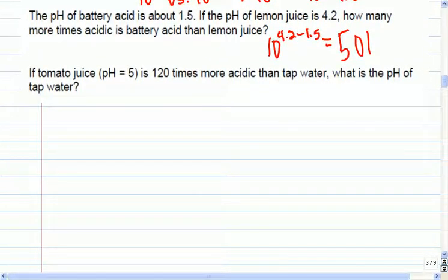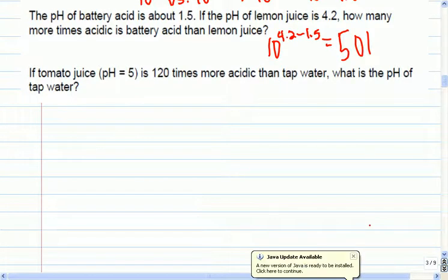Let's see if you can work this one backwards. Tomato juice has a pH of 5. It's 120 times more acidic than tap water. What is the pH of tap water? This is like the earthquake one. You have to work backwards. Put the bigger number on top of your fraction. Which one's going to be bigger? Tap water.